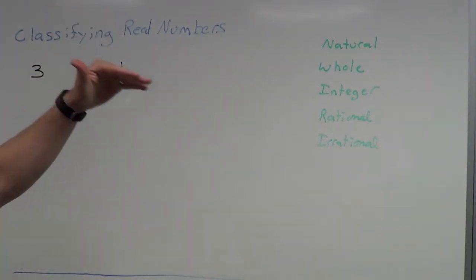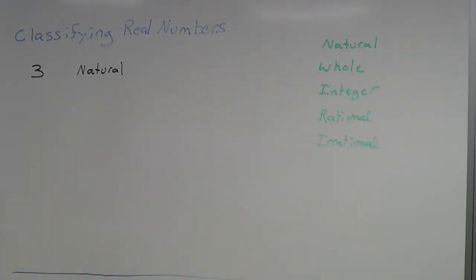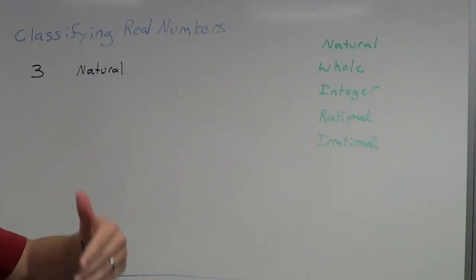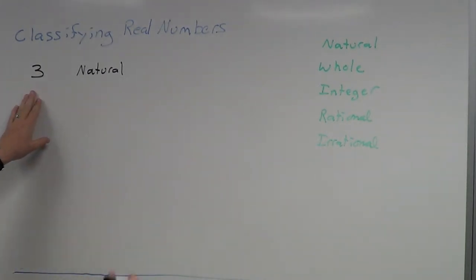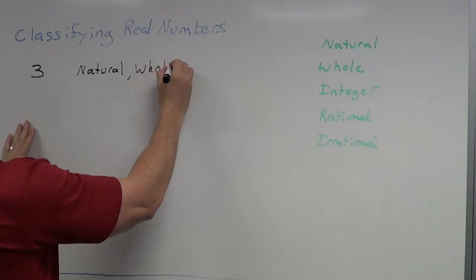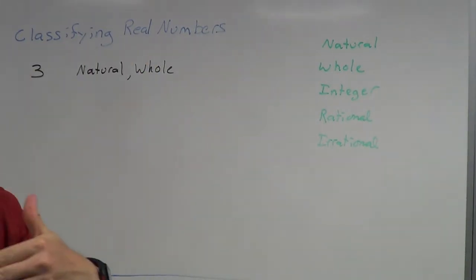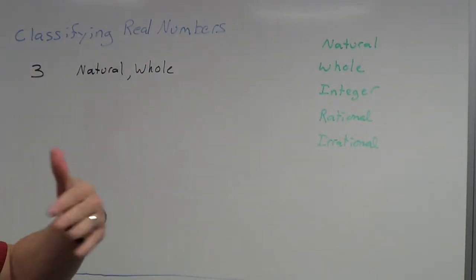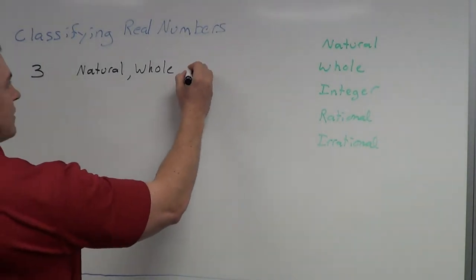Now let's keep going down the list. A whole number — the only difference between natural and whole numbers is you add the number zero in with the whole numbers. So zero, one, two, three, four, five are all whole numbers. Three is included in that, so this is also a whole number. Going down the list — integer. Integers include the whole numbers and the negative whole numbers, so three is also an integer.